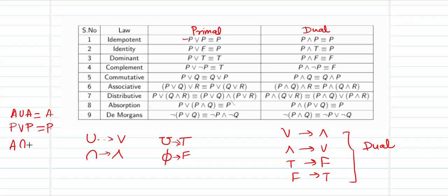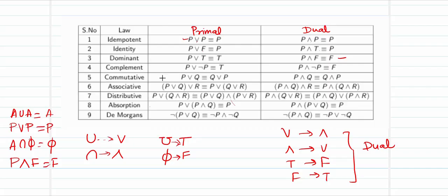A ∩ ∅ gives nothing in common, so P ∧ F ≡ F. So the laws — idempotent, identity, dominant, complement, commutative, associative, distributive, absorption, and De Morgan — are the same as what we have done in the laws of set theory. Just replace the equivalent terms and you need not memorize them separately.